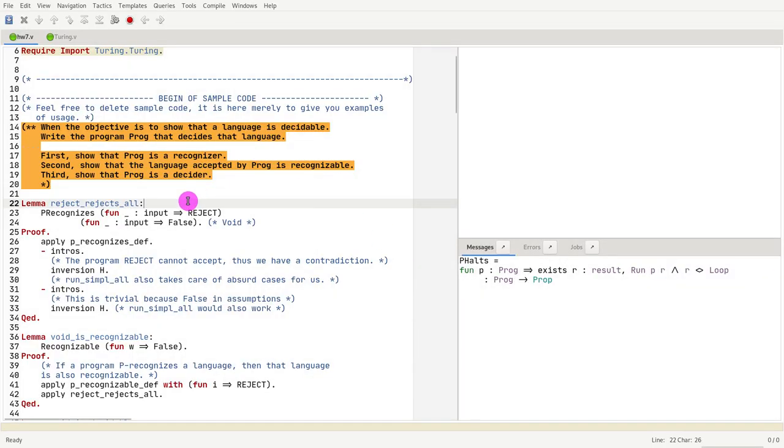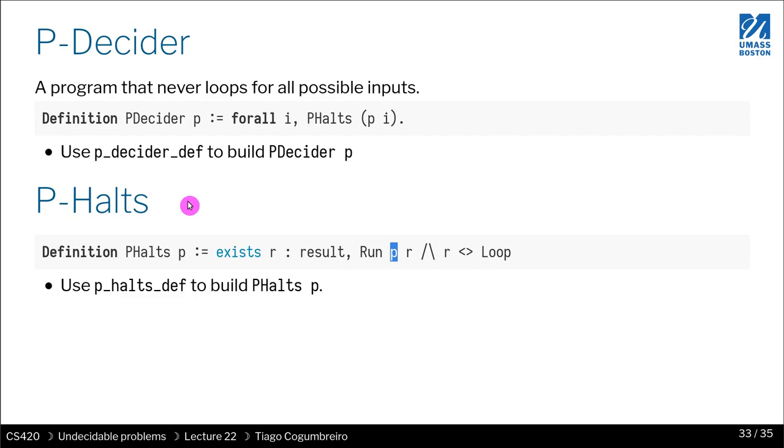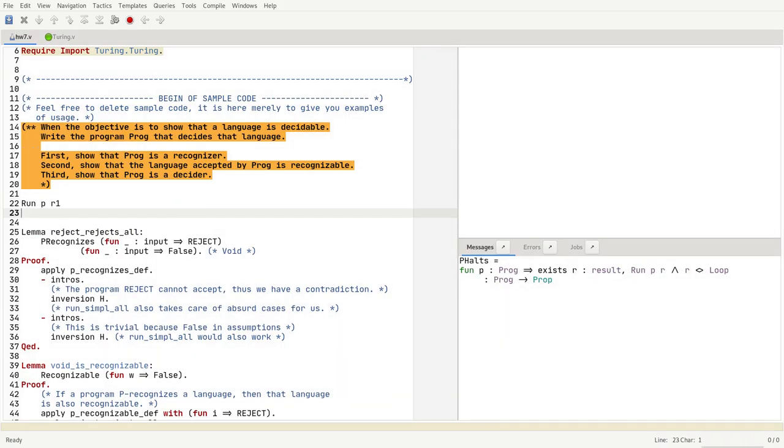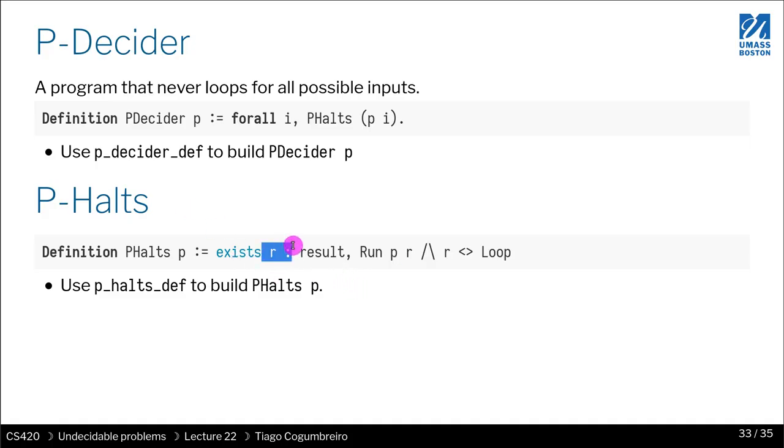You only need to show that there exists some result because all other results will be the same. That is why this existential is there. The way you show that P halts is by showing that its result is not loop.